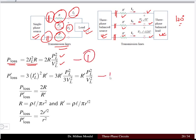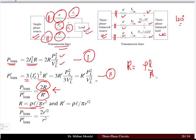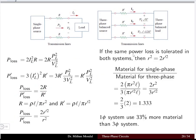For the three-phase system there are three conductors, so the power loss is calculated accordingly. Taking the ratio of single-phase to three-phase power loss gives 2r/r'. Using the conductor resistance formula r = ρl/A (where A = πr²), we can find r and r'. If the same power loss is tolerated in both systems, then r² = 2r', since the total power delivered is equal in both cases.